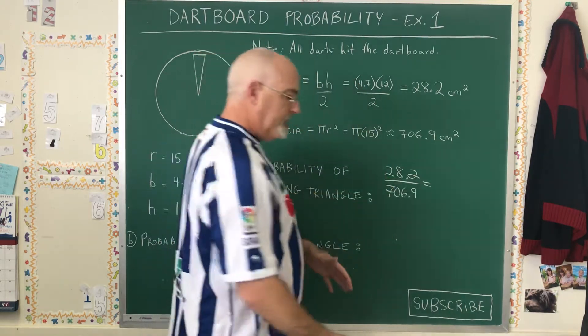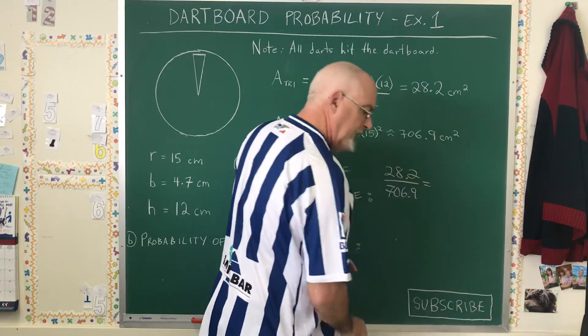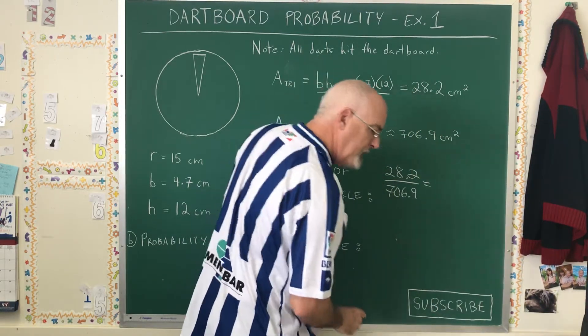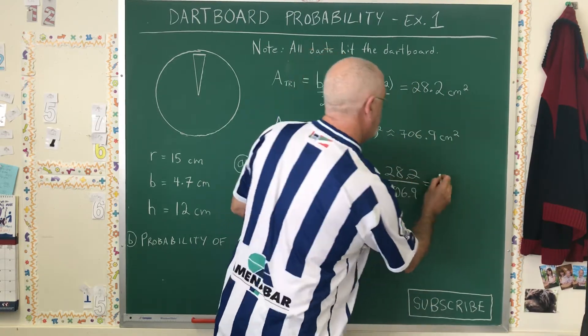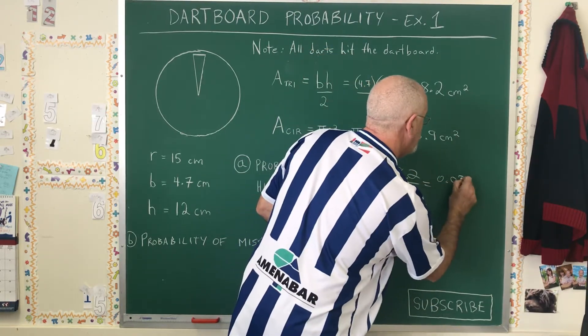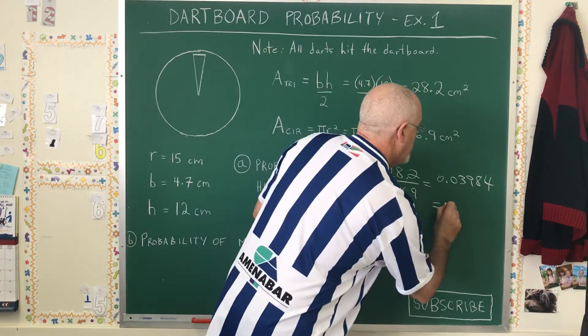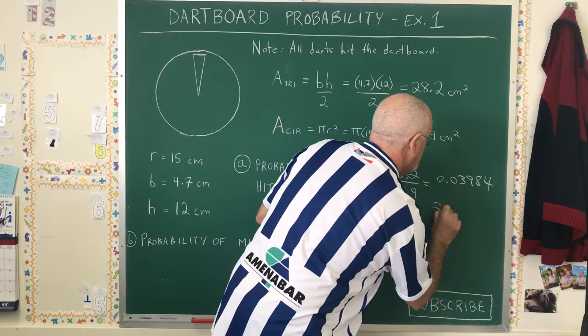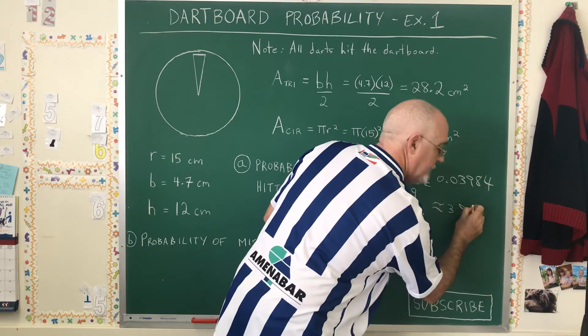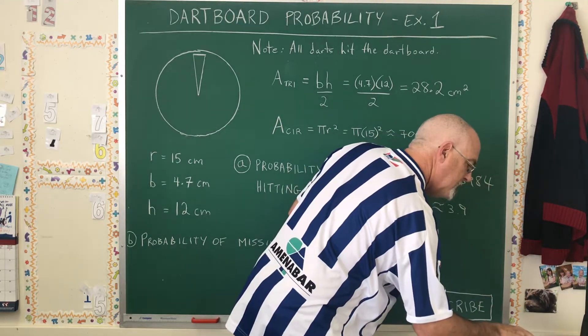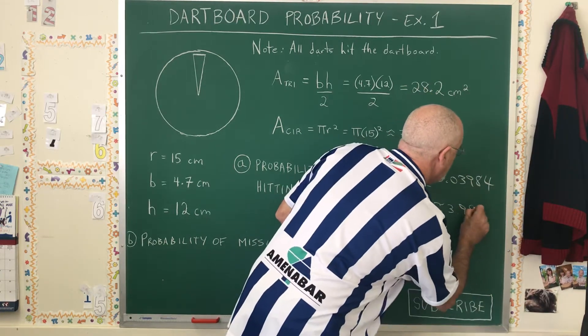We divide, and we get a decimal of 0.03984. Then we multiply that by 100 to get a percentage, and our answer is approximately 3.99%.